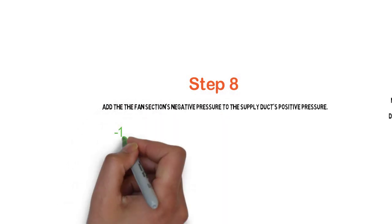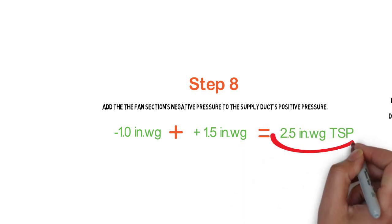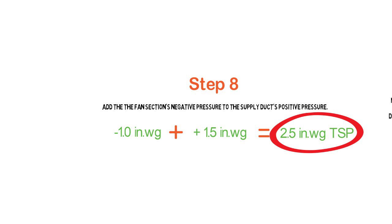Now we're going to add them together. Even though the return was a negative number, we're going to treat it like a whole. So 1 inch plus 1.5 inches equals 2.5 inches total static pressure, or TSP.